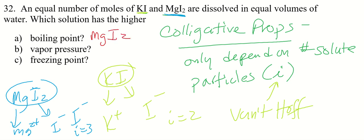It's going to have the higher boiling point and lower freezing point. This question is asking which one has a higher freezing point. You've got to read the question carefully. If it's a lower freezing point, it would be magnesium iodide, but because it's asking for the higher one, that means there's less change in the freezing point. You would have to go with the lower Van't Hoff factor, so that's going to be potassium iodide.